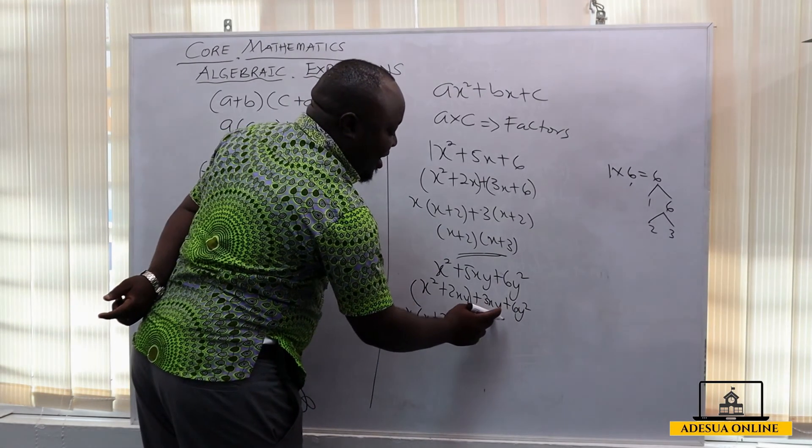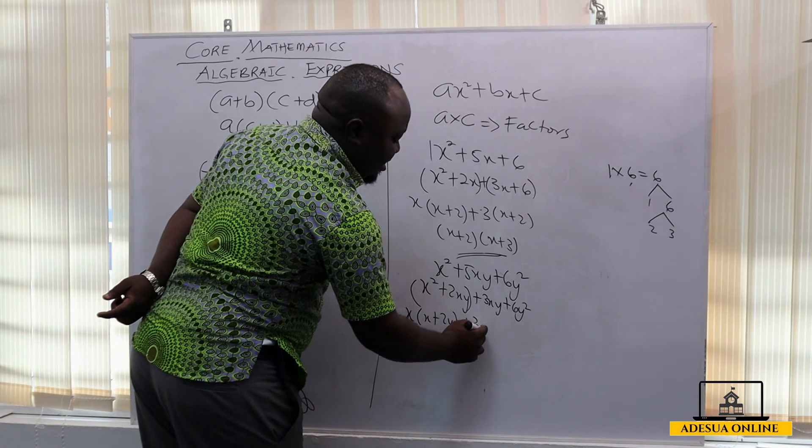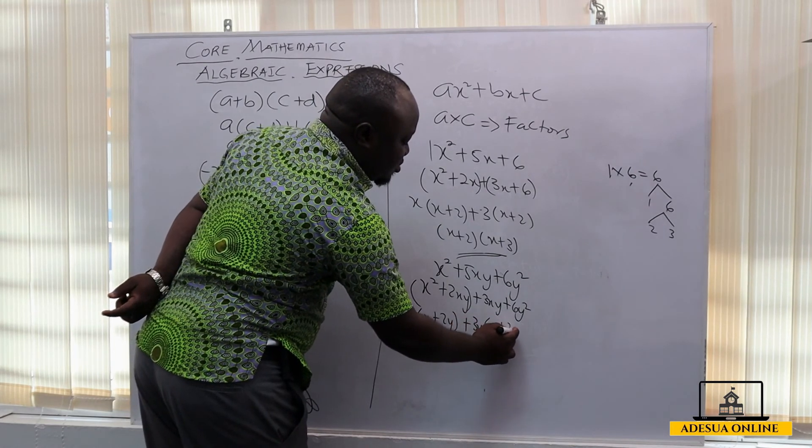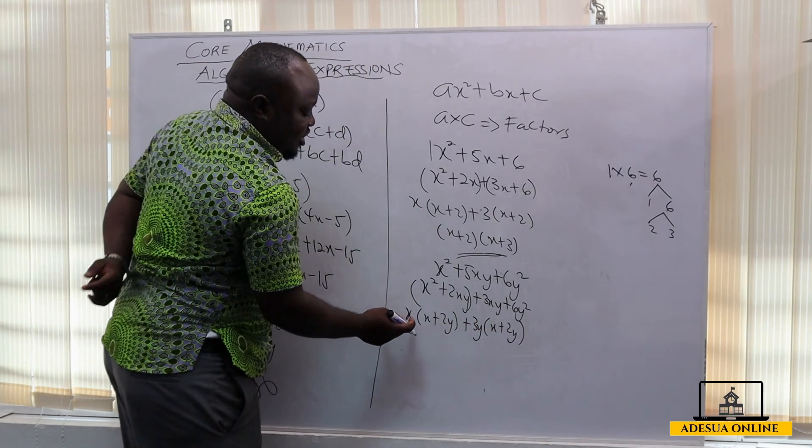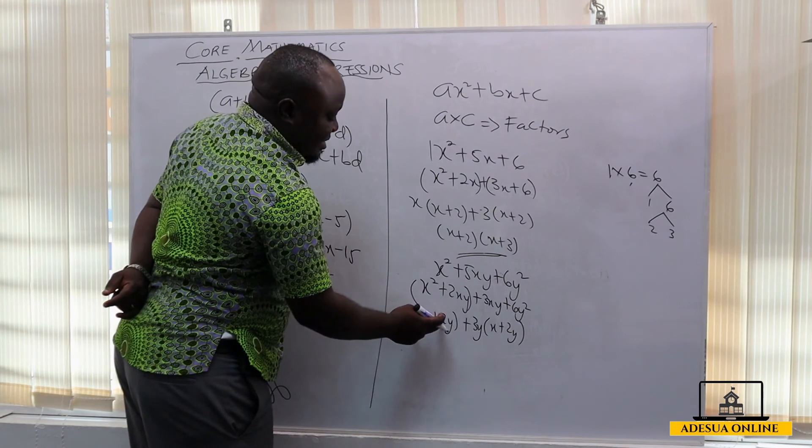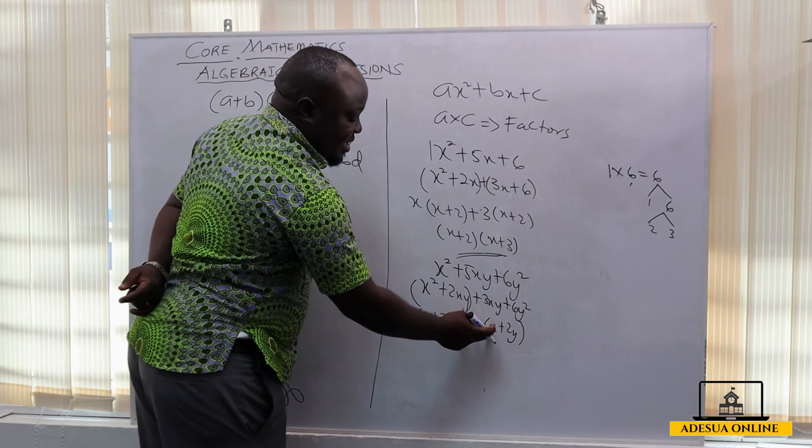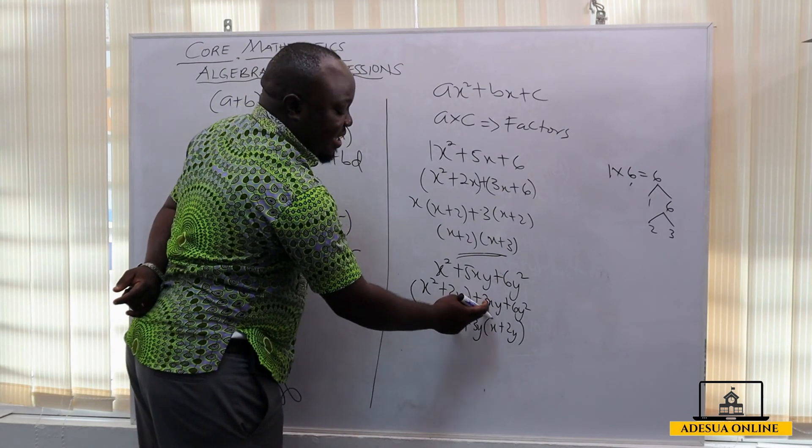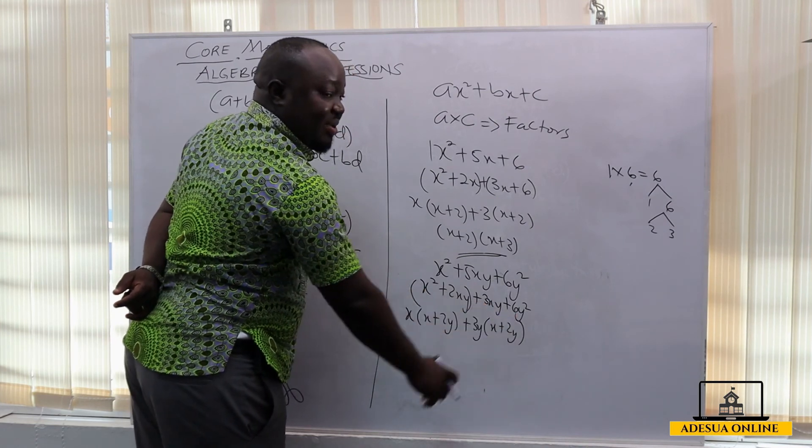Then plus, 3y is also common, and then 3. So 3y is common, I have x plus 2y. So if I multiply this and this, I get this. This times this, I get this. This times this, 3y times x is 3xy. 3y times 2y is 6y squared.